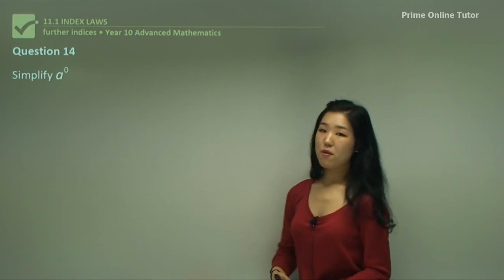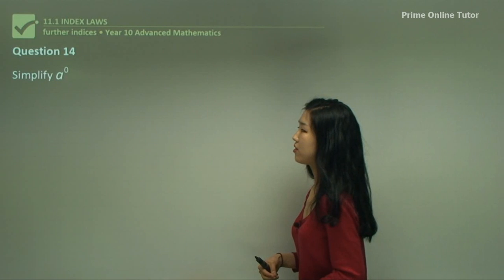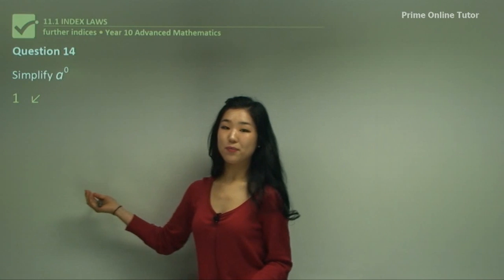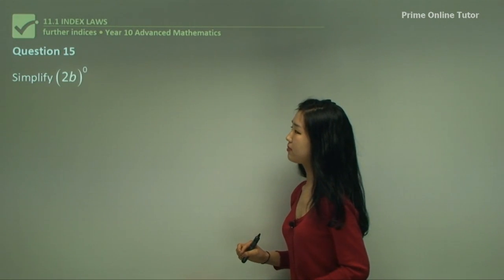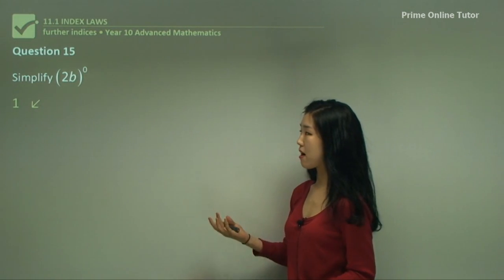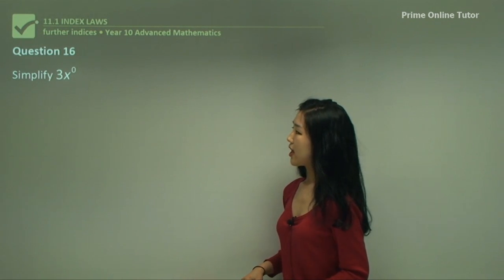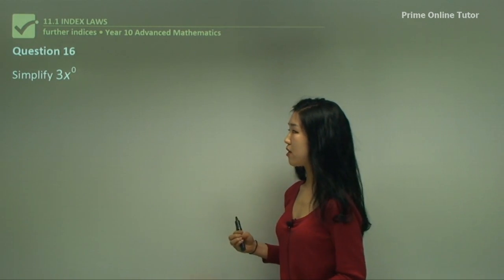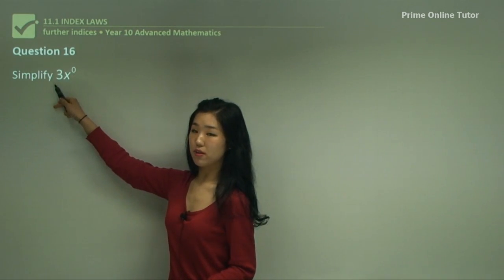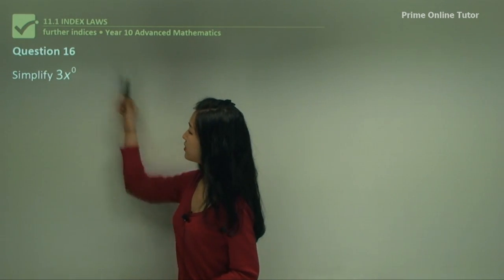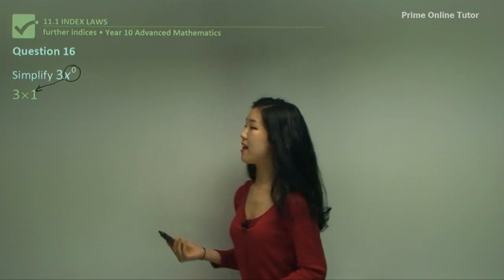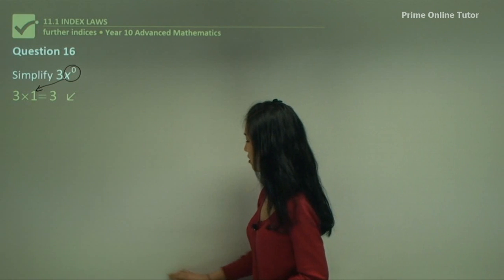Question fourteen asks for a to the power of 0. Anything to the power of 0 is simply 1, so a to the power of 0 is 1. The whole expression 2b to the power of 0 must also be 1 — anything to the power of 0 is 1. Now for 3x to the power of 0, be careful: the zero is a power to x only, not to 3 as well. So x to the power of 0 is 1, making it 3 times 1, which simplifies to 3.